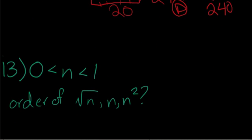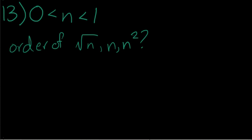Number 13 has to do with square roots, fractions, and exponents. Well, a big mixture. So if 0 is less than n, which is less than 1, which of the following gives the correct ordering of the square root of n, n, and n squared? So if n is between 0 and 1, we can assume that it's a fraction. So let's pick a fraction like 1 fourth.